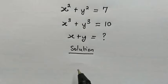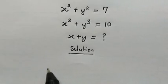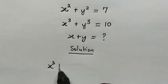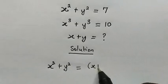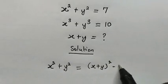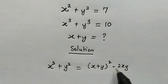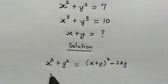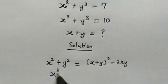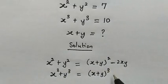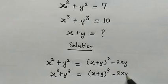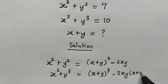In this video, I'll be making use of the following nice algebraic identities. We have this very famous identity: x squared plus y squared is equal to x plus y, squared, minus 2 times x times y. And we have this identity for the sum of two cubes: x cubed plus y cubed is equal to x plus y, cubed, minus 3 times x times y into bracket x plus y.